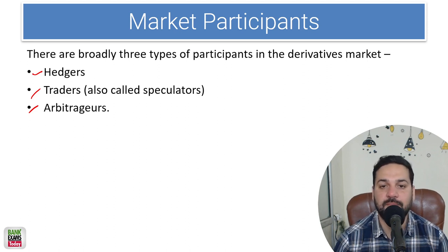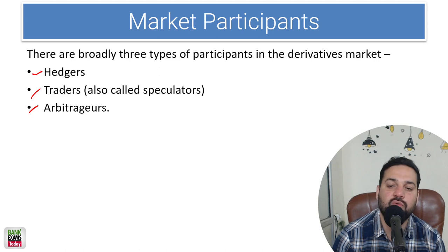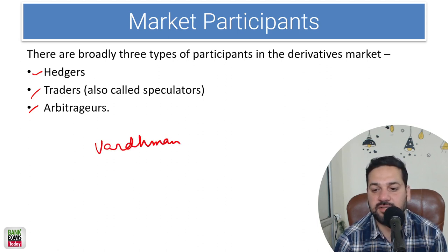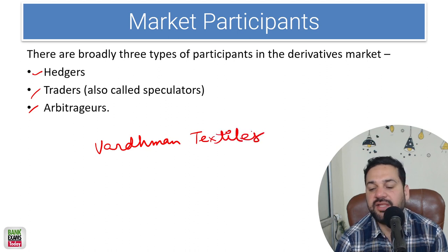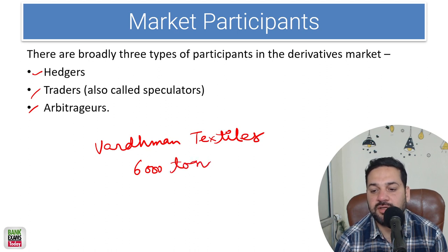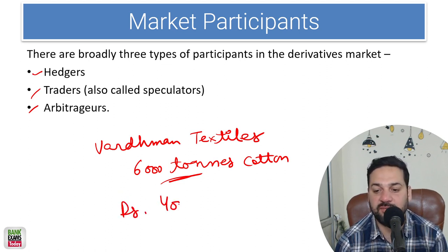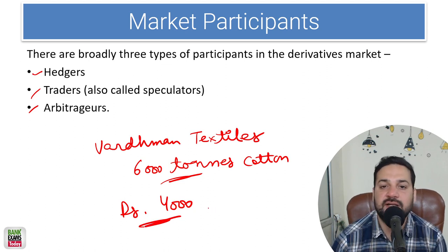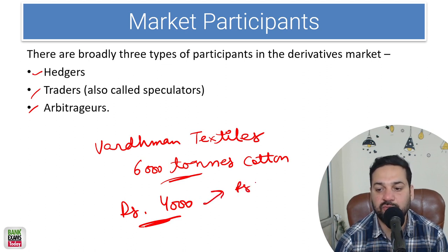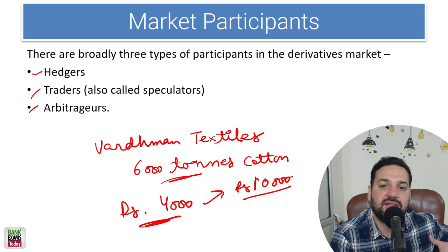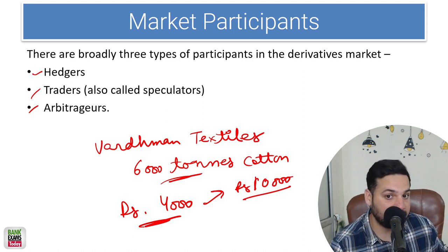Hedgers are in the market to avoid risk. For example, Vardhman Textiles needs six thousand tons of cotton in a year. They write their quotations based on a price — let's say four thousand rupees per ton. They take the tender, the agreement is made. But when they actually start purchasing cotton from the market, the price goes up to ten thousand rupees, putting them into huge losses. That risk-avoidance strategy is known as hedging.